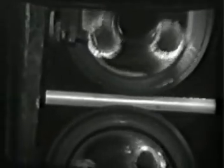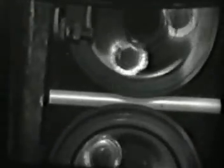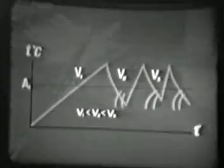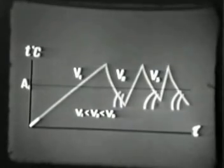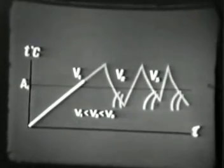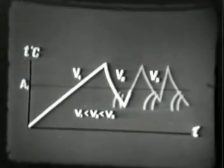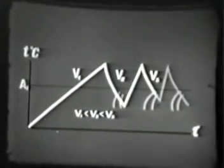Отжиг с фазовой перекристаллизацией, проводимый в индукционных установках, формирует однородную дисперсную структуру. После быстрого индукционного нагрева выше температуры Ac1 металл должен находиться несколько часов в тепловой камере при температуре на 10–30°C ниже точки перлитного превращения. Значительно лучших результатов удаётся добиться всего за несколько минут путём циклирования с нарастающей скоростью около температуры перлитного превращения: уже через два-три цикла получается достаточно мелкодисперсная структура зернистого перлита.